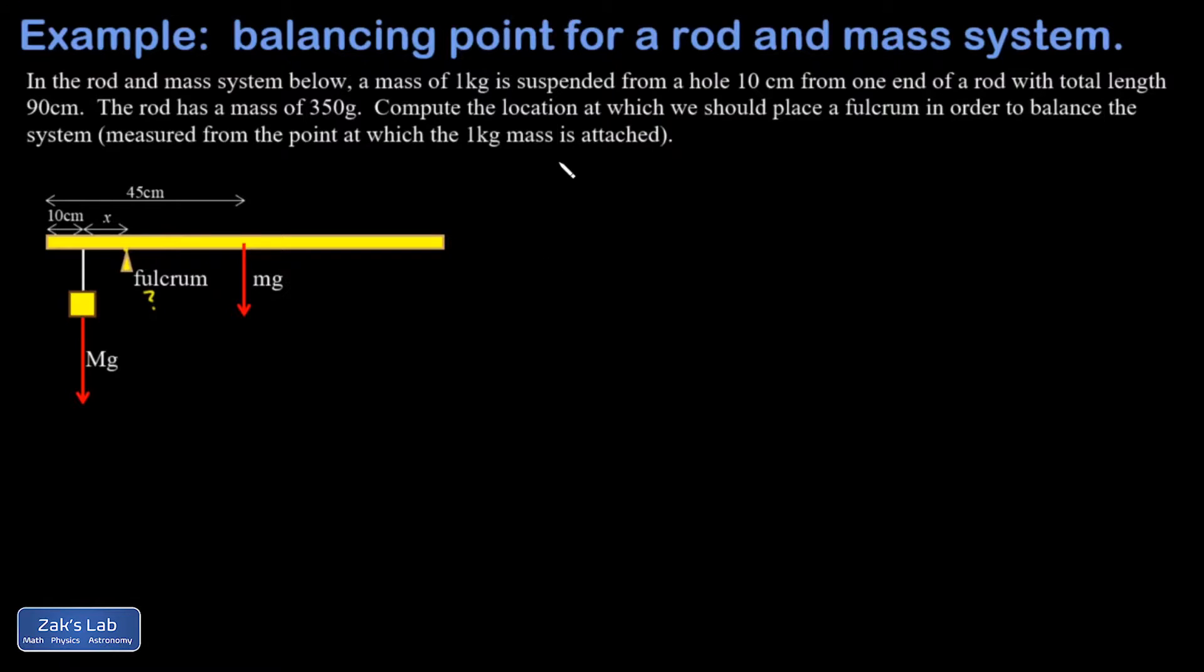So let's look at numbers real quick. The actual rod has a mass of 350 grams, but I'm going to write that in kilograms. The hanging mass is one kilogram. So the force exerted there by gravity is going to be 9.8 newtons.